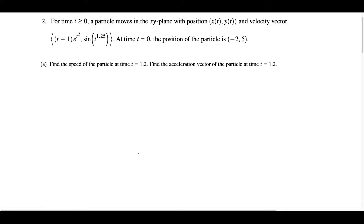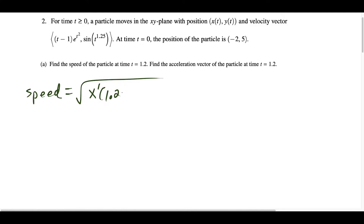Looking at part A, we want to find the speed of the particle at time t equals 1.2. Speed is equal to the square root of the velocity in x at 1.2 squared plus the velocity in y at 1.2 squared. If position is x, y, then velocity is x prime, y prime. So we're finding x prime of 1.2 squared plus y prime of 1.2 squared under a square root.